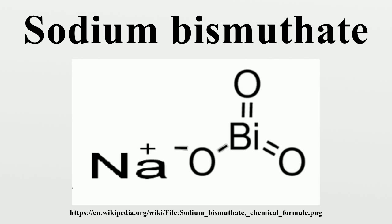Synthesis and reactions: Bismuth oxidizes to Bi⁵⁺ only with difficulty in the absence of alkali. For example, the simple oxide Bi₂O₅ remains poorly characterized. The preparation of this salt involves oxidizing a mixture of Bi₂O₃ and Na₂O with air: Na₂O + O₂ + Bi₂O₃ → 2 NaBiO₃. The procedure is analogous to the oxidation of manganese dioxide in alkali to give sodium manganate.